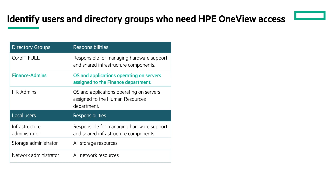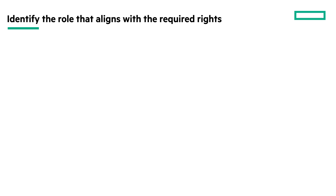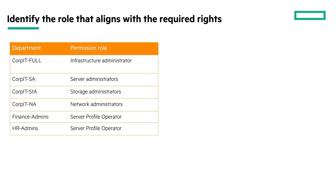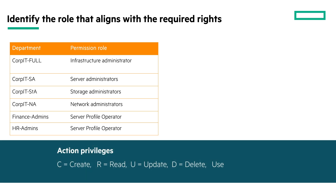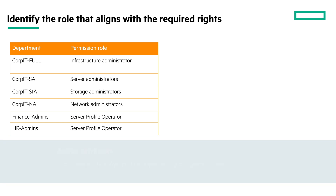Finance admins is another group category which needs access to finance servers only. Identify the local users and groups each category of users will be part of. Now that you have identified the resources and users or directory groups, let us determine the role. As shown in the table, for each class of user, identify the HPE OneView role that matches the required privileges. Each role has predefined action privileges assigned to it for every resource category. The action privileges are create, read, update, delete, and use. Determine if the rights granted by the role must be restricted by scope. Identify the resource categories the user must manage and consider the actions a user must not be allowed.